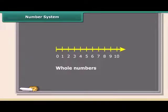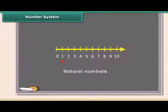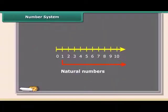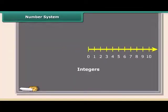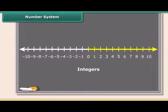Whole numbers are simply the numbers 0, 1, 2, 3, 4, 5, and so on. There are no fractions. Natural numbers are the positive whole numbers except 0. Integers are like whole numbers but they also include negative numbers, so integers can be positive, negative, and 0.